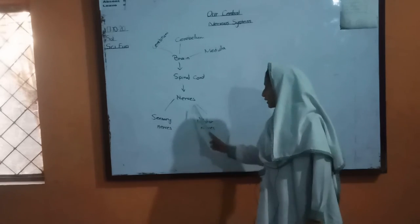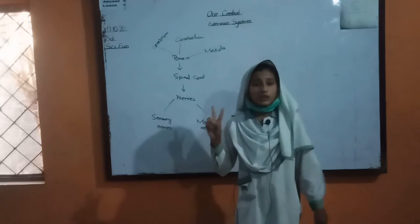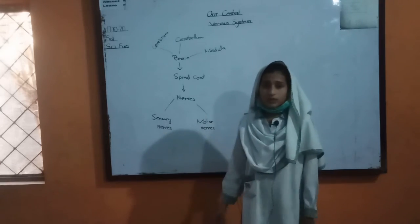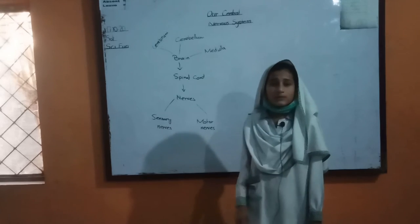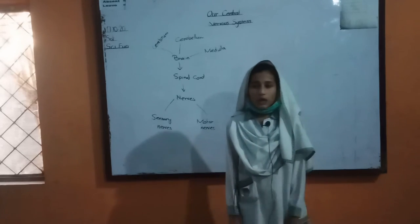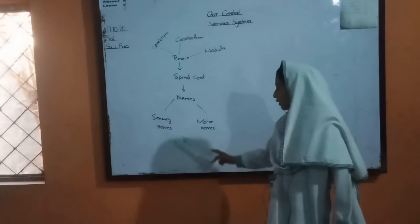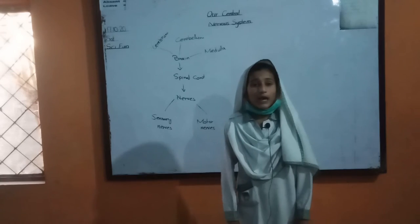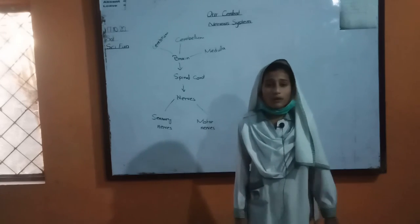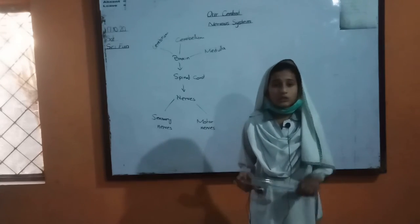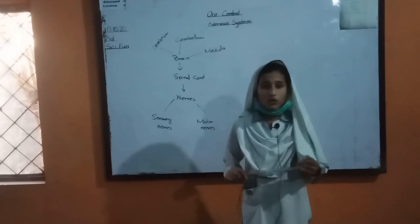Now I will tell you about nerves. There are two types of nerves: sensory nerves and motor nerves. Sensory nerves carry signals from our sense organs to the spinal cord.